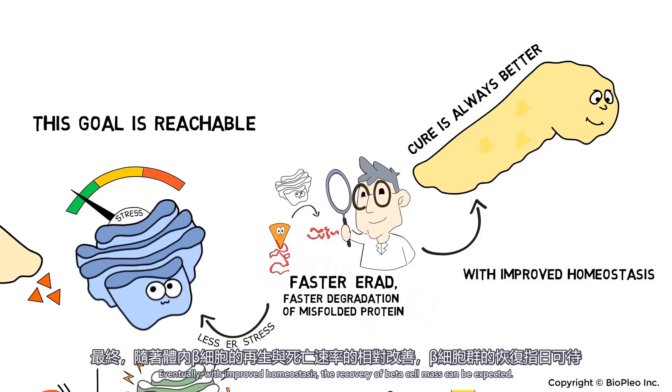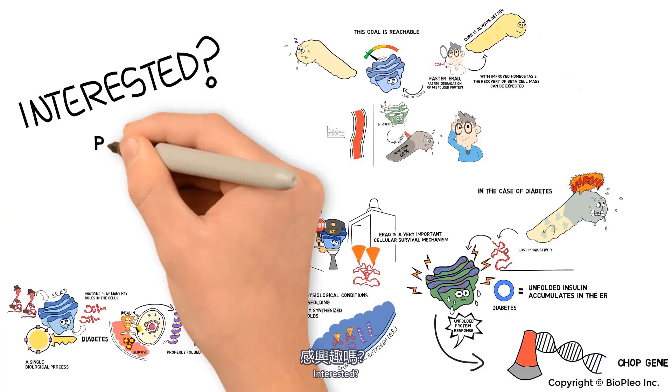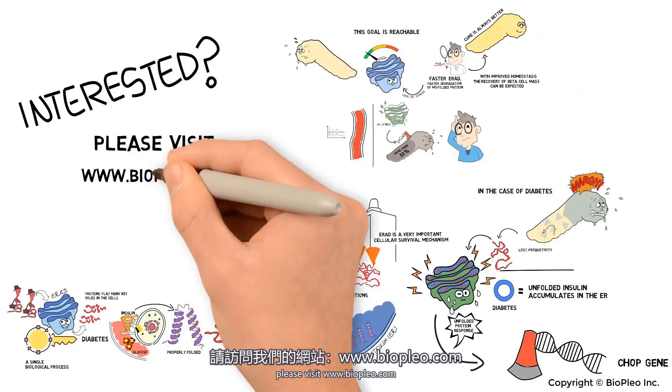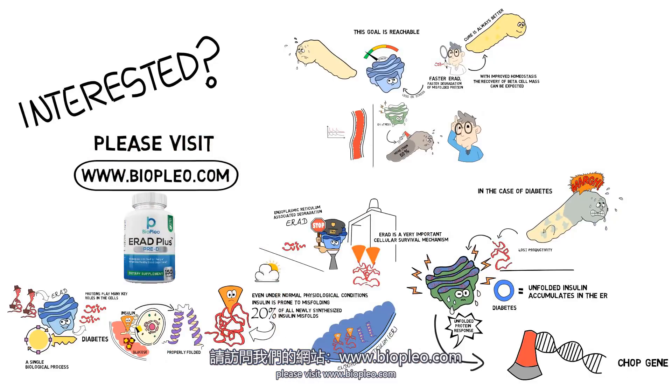Eventually, with improved homeostasis, the recovery of beta cell mass can be expected. Interested? Please visit www.bioplayo.com.